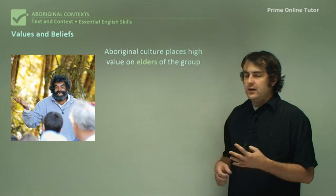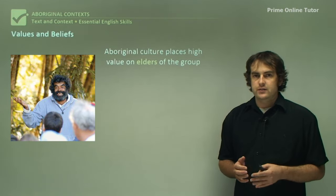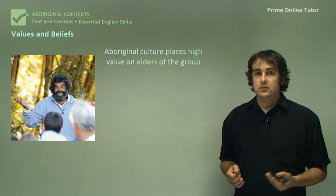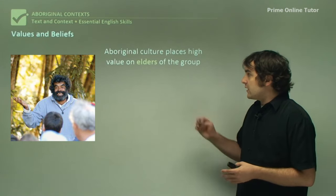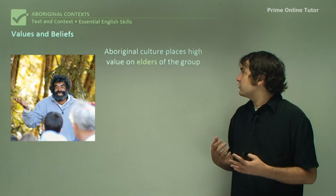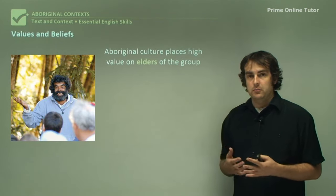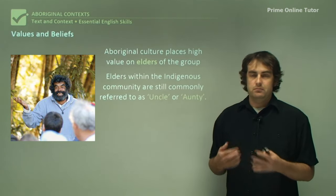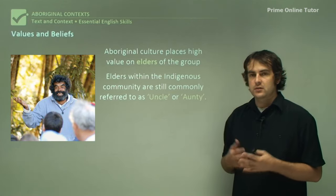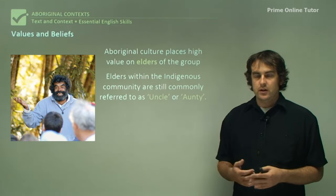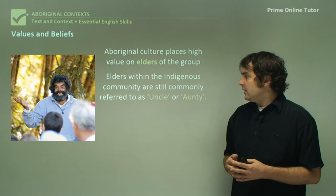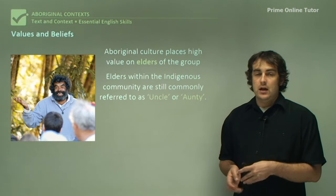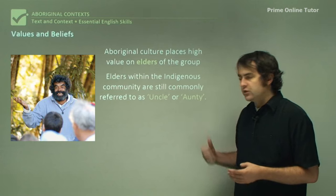The values and beliefs of Indigenous Australians have changed significantly. Obviously the arrival of Europeans has had a huge effect on Aboriginal communities and their values. One thing that still sticks around to this day is that Aboriginal culture places high value on elders in a group, and particularly uncles and aunties. Anyone who is old or basically the elders of the Indigenous community are still referred to as uncle or auntie. It's a sign of respect, a sign of kinship, and it signifies their role in the community as leaders.